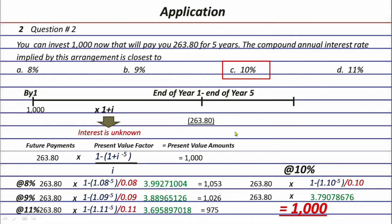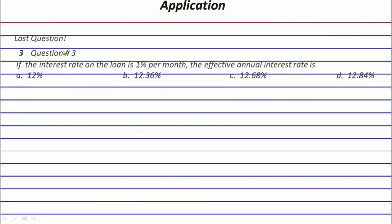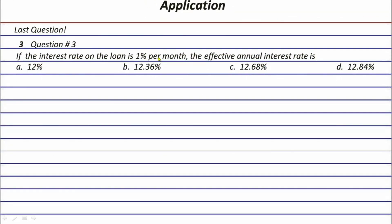Now let's have the third question. If the interest rate on a loan is one percent per month, the effective annual interest rate is closest to: letter A, 12 percent; letter B, 12.36 percent; letter C, 12.68 percent; or letter D, 12.84 percent. That single sentence is already the step one requirement.